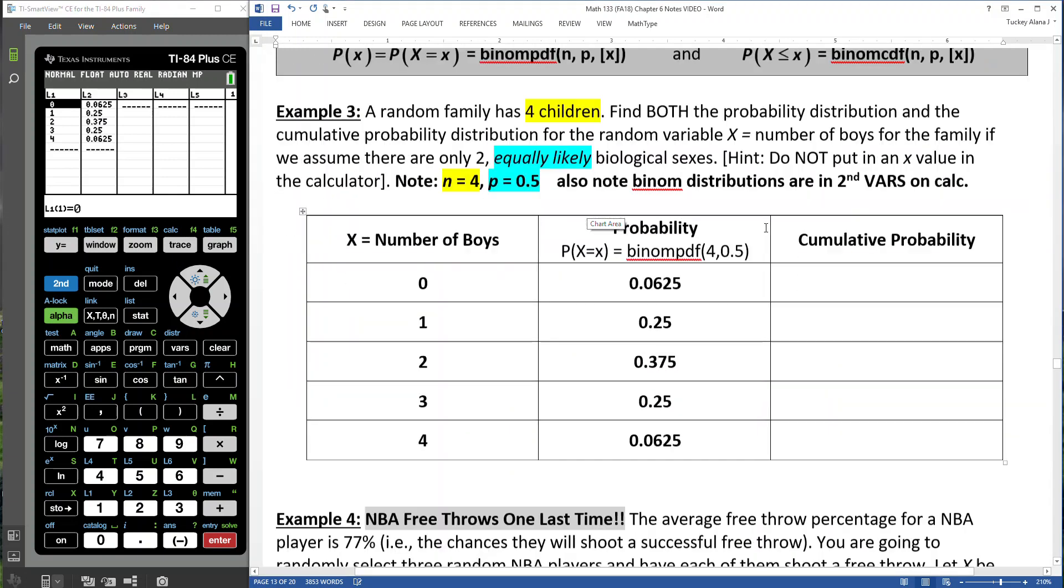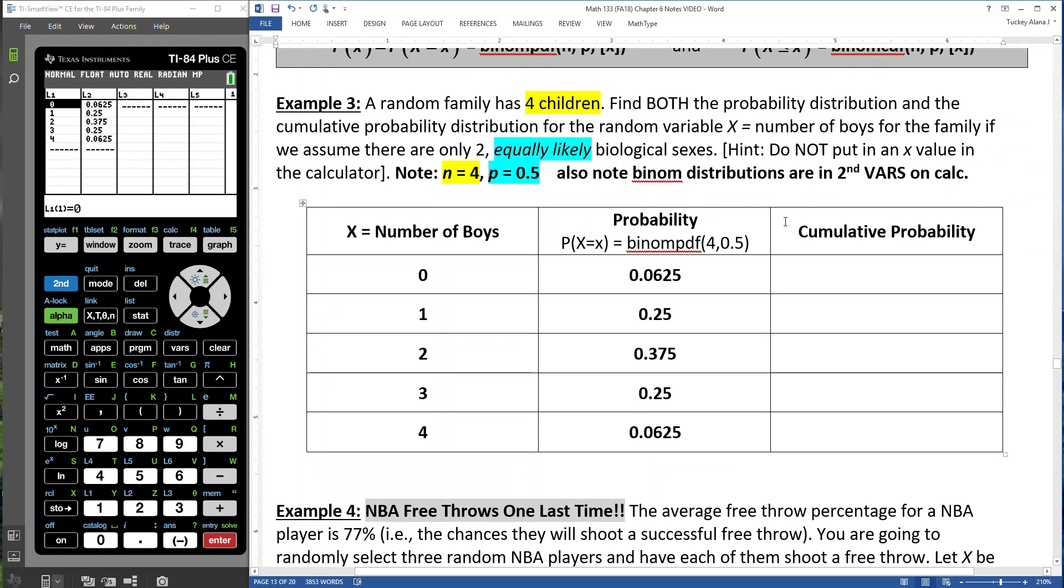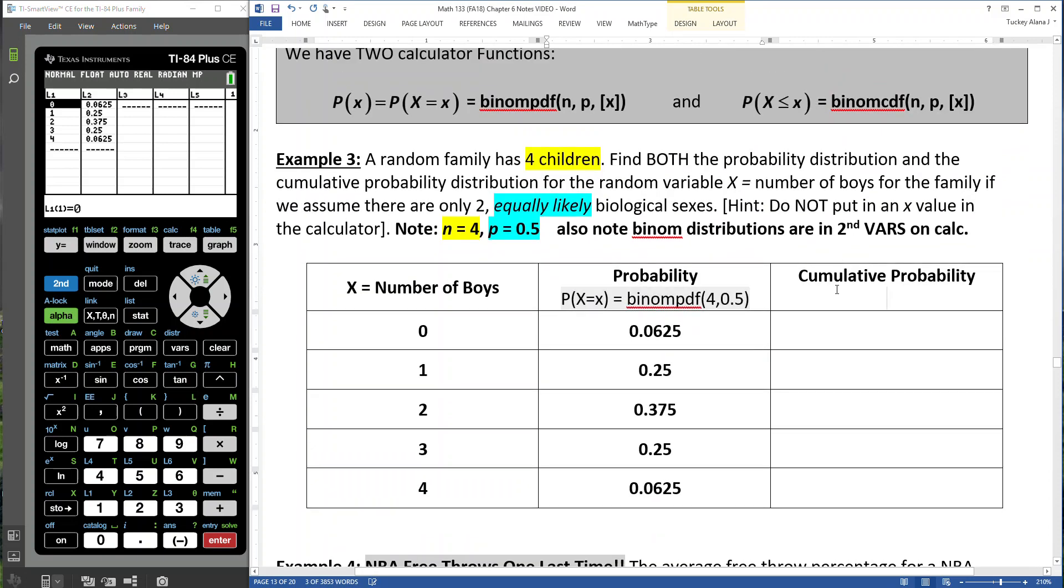Here we are. Here are these distributions. Now what about the cumulative probability? The cumulative probability is the probability that X is less than or equal to X. That's the cumulative CDF function. And I know you're thinking, well, what's the difference? Well, when you see it, I think you'll understand it better.